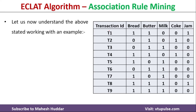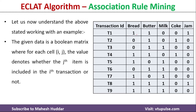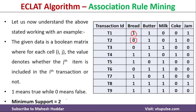In this case, we have been given totally nine transactions starting from T1 to T9. There are five items given to us: bread, butter, milk, coke, and jam. In this Boolean matrix, the value 1 indicates a particular item is present in that transaction, and the value 0 indicates an item is not present. Minimum support given to us is 2, meaning an item is called a frequent item if it is present in at least 2 transactions.